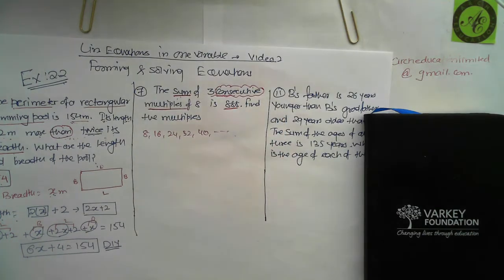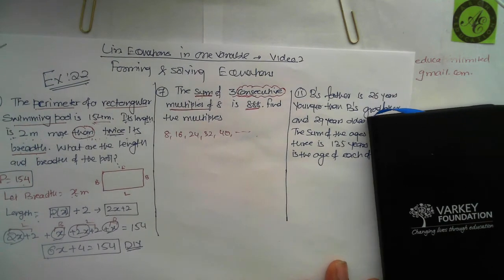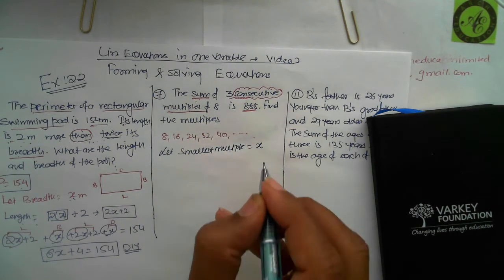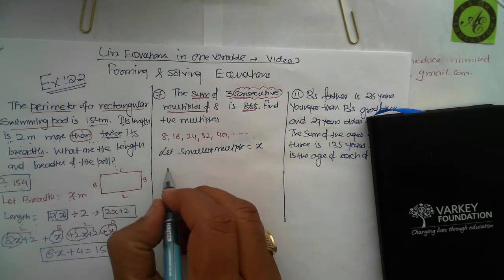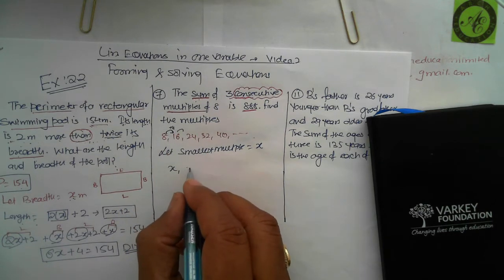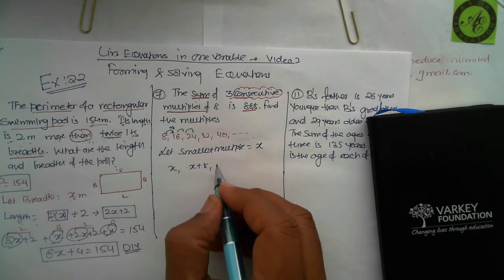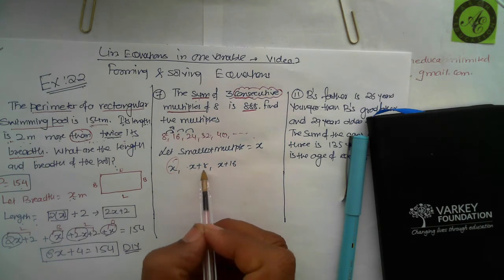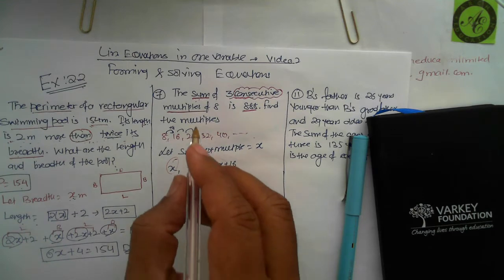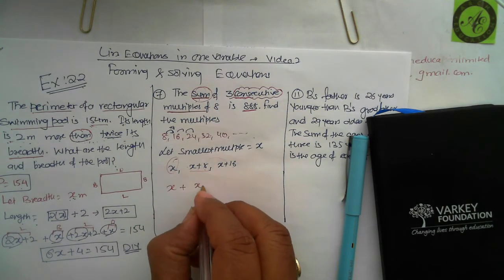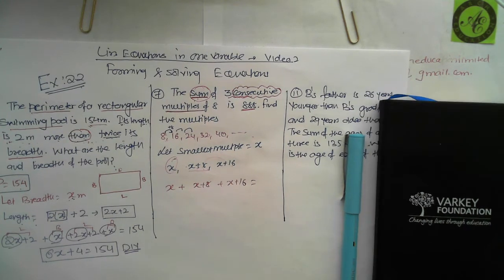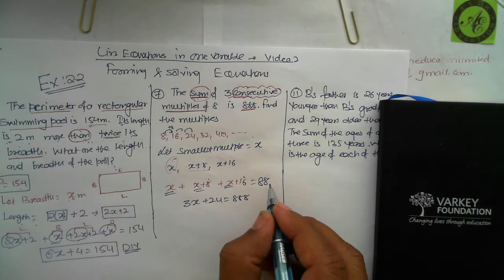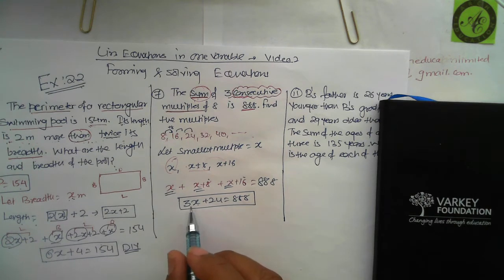There's no word 'than' given, so we generally take the smallest quantity. Let the smallest multiple be x. The next multiple is x + 8, and the one after that is x + 16. The sum gives us: x + (x + 8) + (x + 16) = 888. Simplifying: 3x + 24 = 888. This is a type 1 equation — leave it to try yourself and we'll check the answer later.